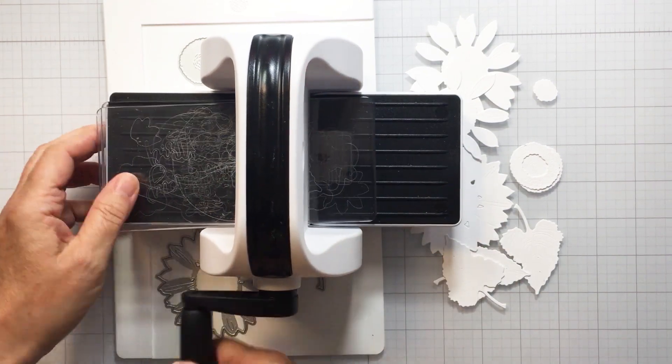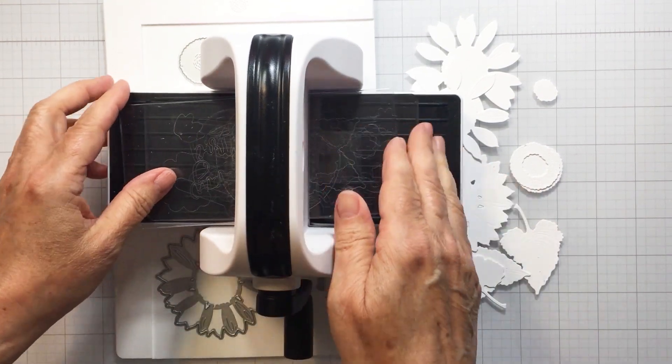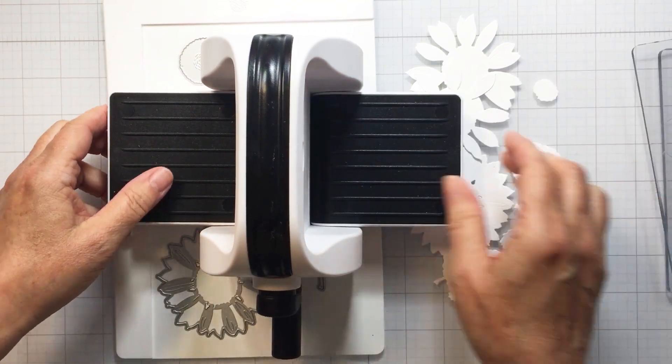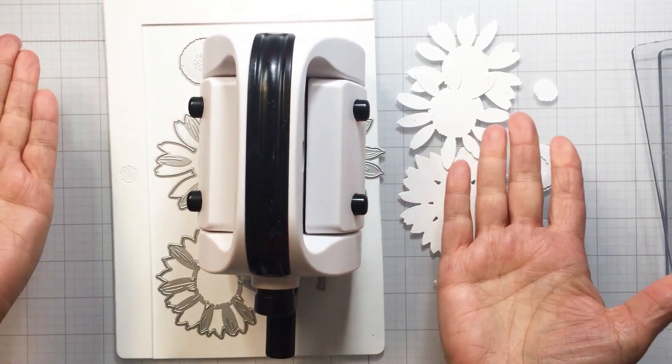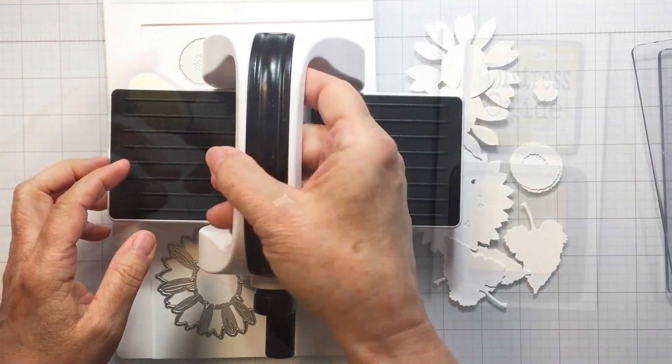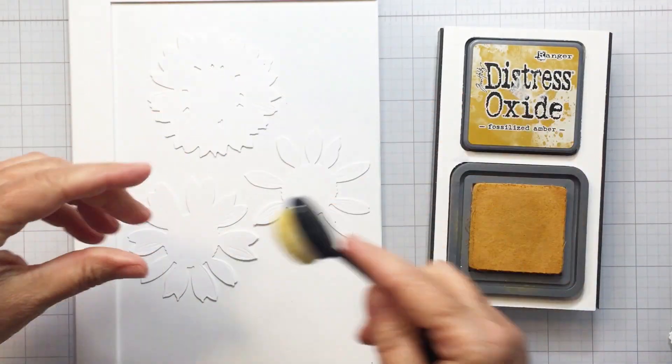I cut out all of my pieces for my lovely layers sunflower today using the bitty buzz cutter. I love this little machine, how it folds up, how it's compact, and it is perfect for cutting those small dies.